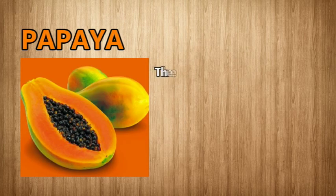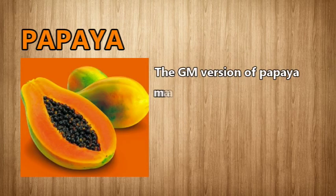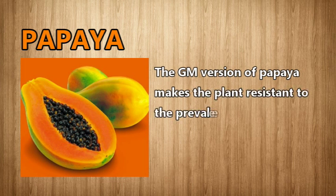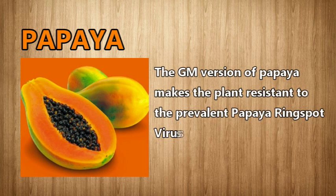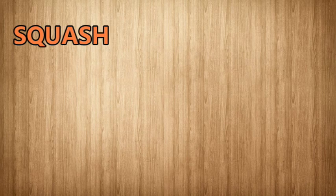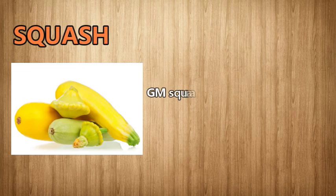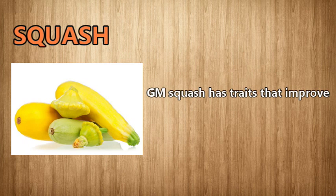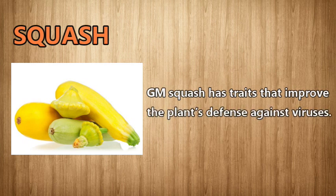Papaya: the GM version of papaya makes the plant resistant to the prevalent papaya ring spot virus. Squash: GM squash has traits that improve the plant's defense against viruses.